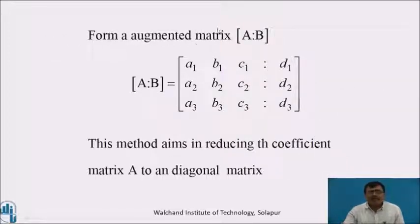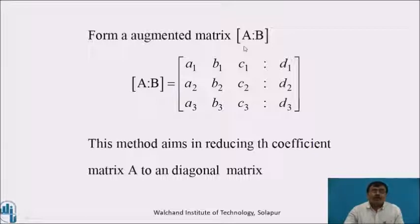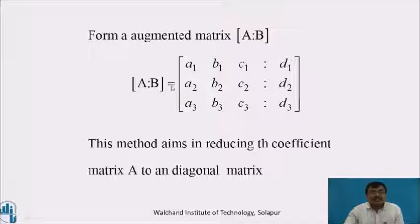The augmented matrix A|b — it means inserting or adding a column to the coefficient matrix which consists of the elements of b. Such a matrix is called the augmented matrix. A|b equals [a1, b1, c1, d1; a2, b2, c2, d2; a3, b3, c3, d3].